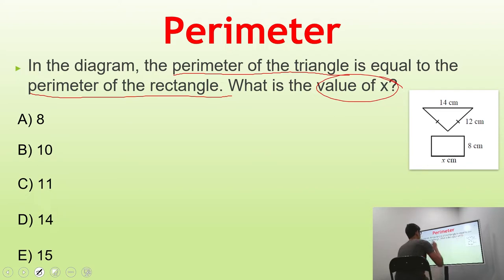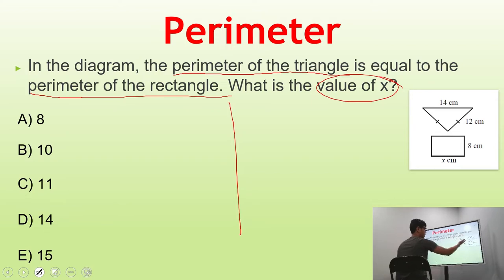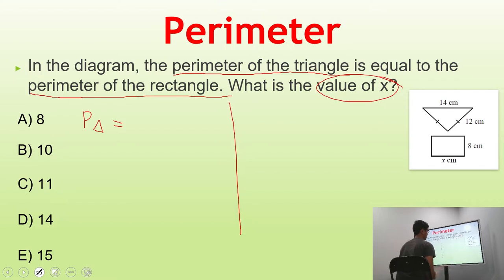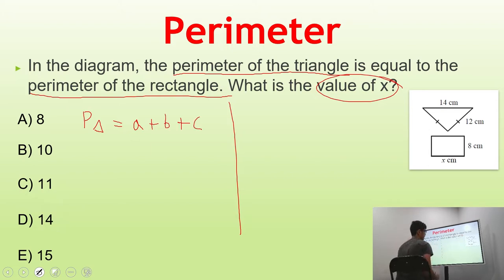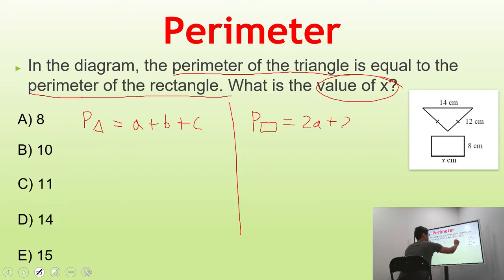To solve this problem, we're going to define the perimeter for both the triangle and the rectangle. The perimeter of the triangle is equal to A plus B plus C — that's just all the sides added together. The perimeter of the rectangle is equal to 2A plus 2B.